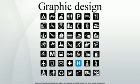For example, a product package might include a logo or other artwork, organized text and pure design elements such as images, shapes and color which unify the piece. Composition is one of the most important features of graphic design, especially when using pre-existing materials or diverse elements.